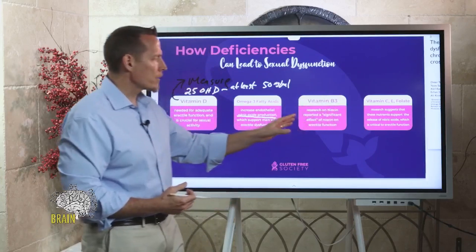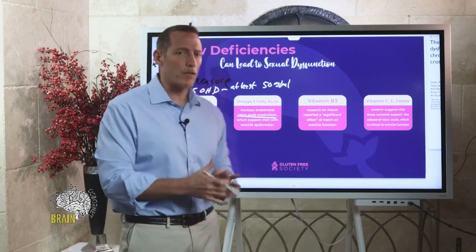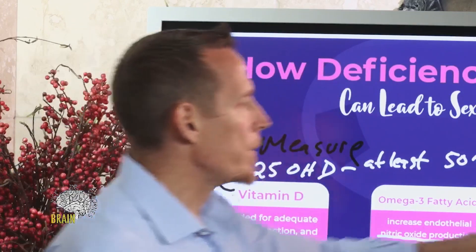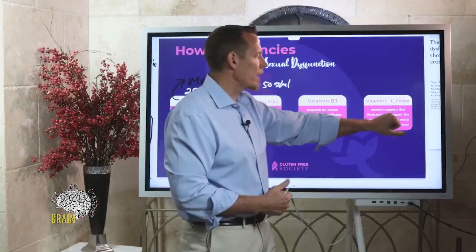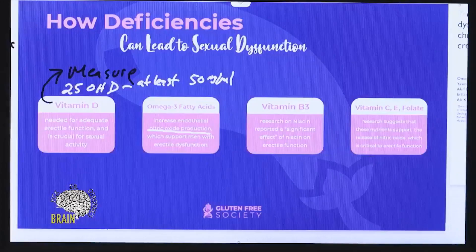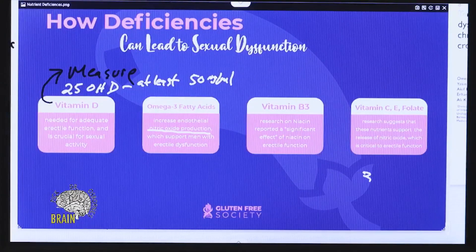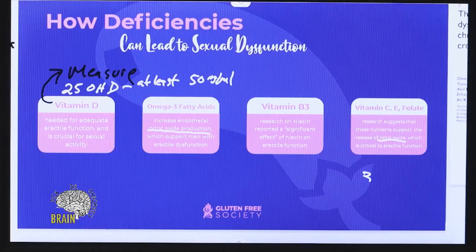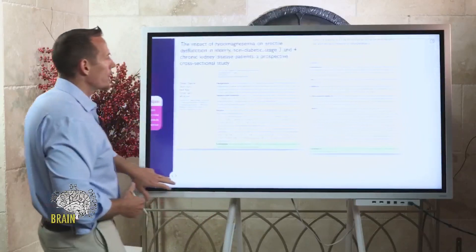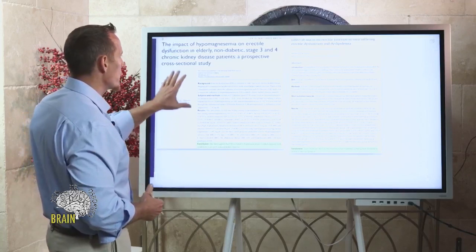Vitamin B3 — niacin — has studies showing that supplementing it alone can enhance erectile function and performance in men. Vitamins C, E, and folate all play a role in the same molecule: nitric oxide. Nitric oxide is necessary for erectile function as an overall chemical in that process, so it's hard to maintain good function without it.